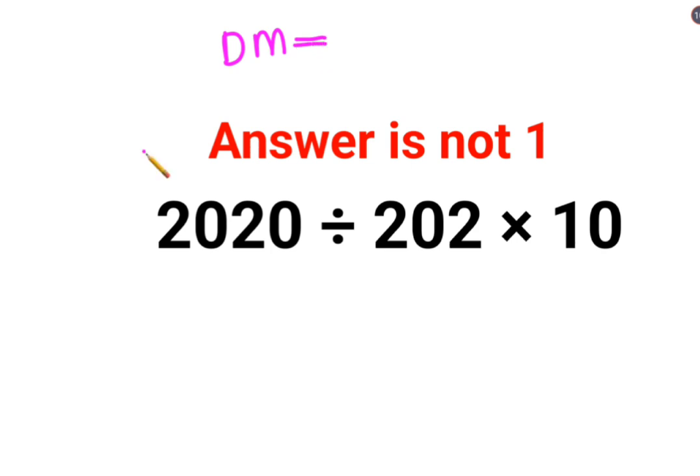So in sums like these when there is division as well as multiplication you just have to remember one simple rule of going left to right. Means whatever operation comes first from your left hand side has to be done first.